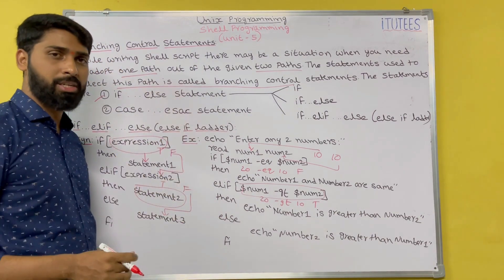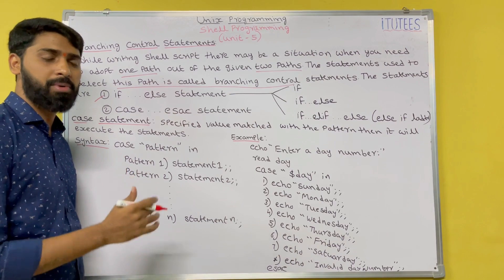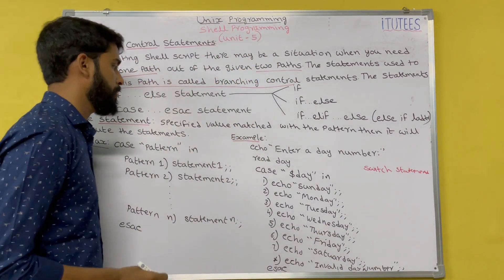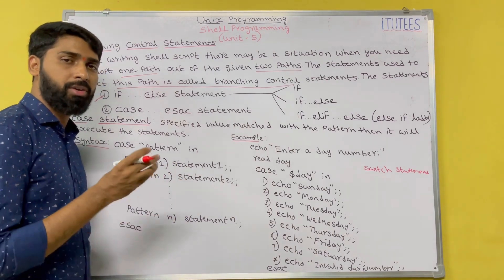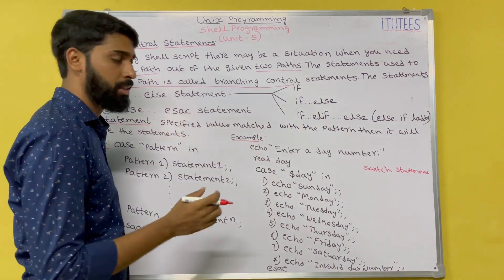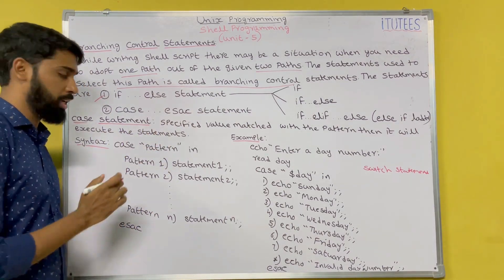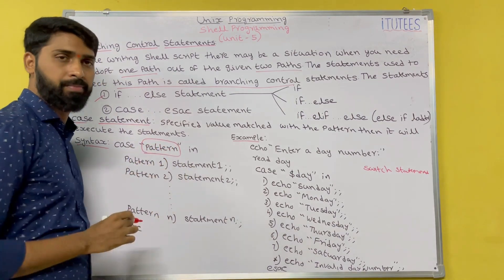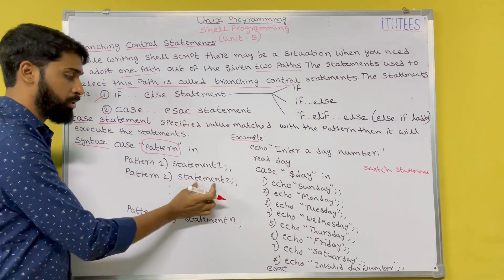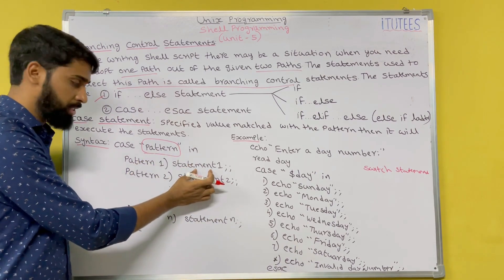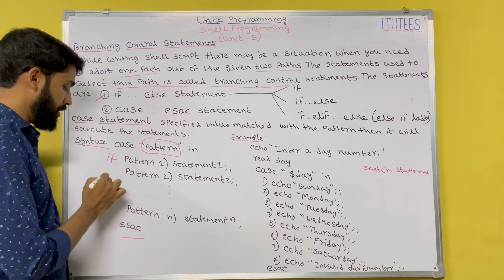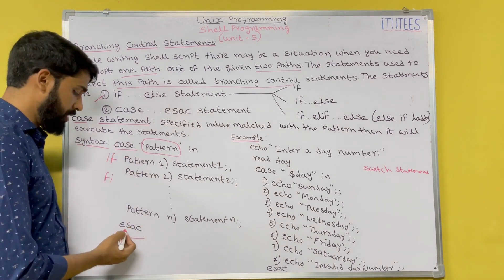Now we see the case statement, which is similar to the switch statement in C language. In switch, you give one value; if the value matches a case, you execute that statement. Similarly in case, the specified value is matched with a pattern and the corresponding statement executes. The syntax is: 'case' followed by the pattern and 'in'. If the pattern matches pattern 1, execute its statements; if pattern 2, execute those; and so on. We terminate with 'esac', similar to how if is terminated with fi.